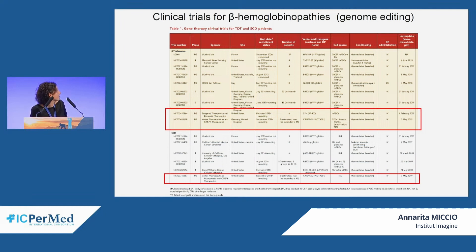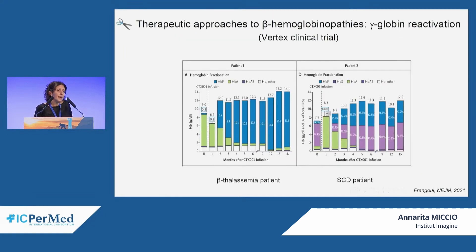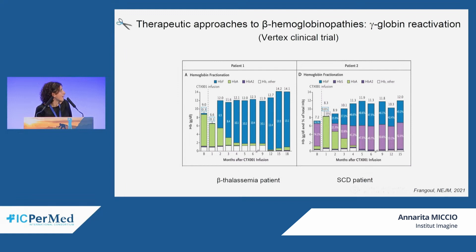These are some of the first clinical trials using CRISPR-Cas9 nuclease, run by Sangamo and Vertex for both beta-thalassemia and sickle cell disease patients. Last year, first results from the Vertex trial were published: one beta-thalassemia patient and one sickle cell disease patient reached near-normal hemoglobin levels thanks to fetal gamma-globin reactivation, shown in blue, and both showed substantial amelioration of clinical phenotype.